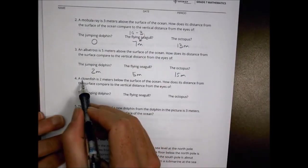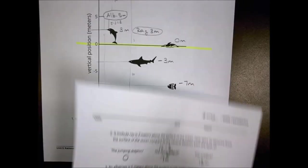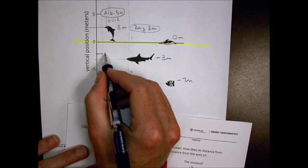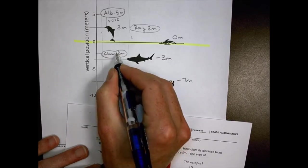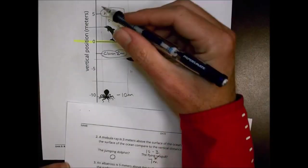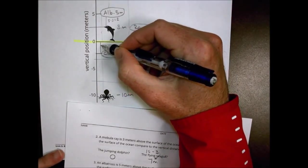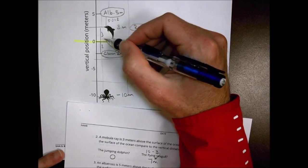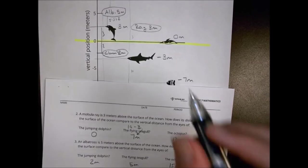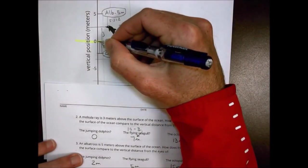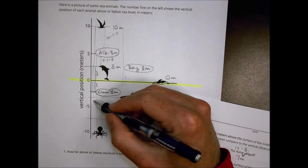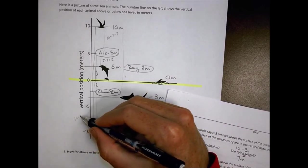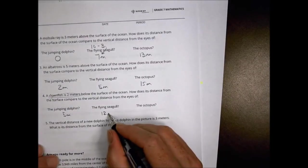A clownfish is 2 meters below the surface of the ocean, so it's at negative 2. Distance to the dolphin at positive 3: go up 2 to reach zero, then up another 3, so 2 plus 3 equals 5 meters. Distance to the seagull at 10: 2 plus 10 equals 12 meters. Distance to the octopus at negative 10: both are below zero, so 10 minus 2 equals 8 meters.